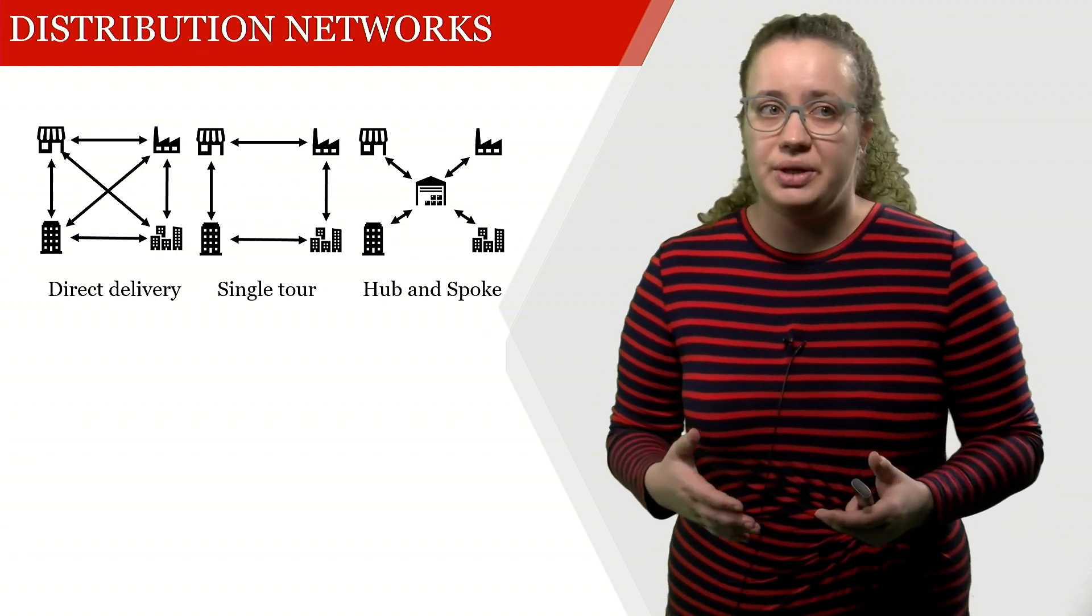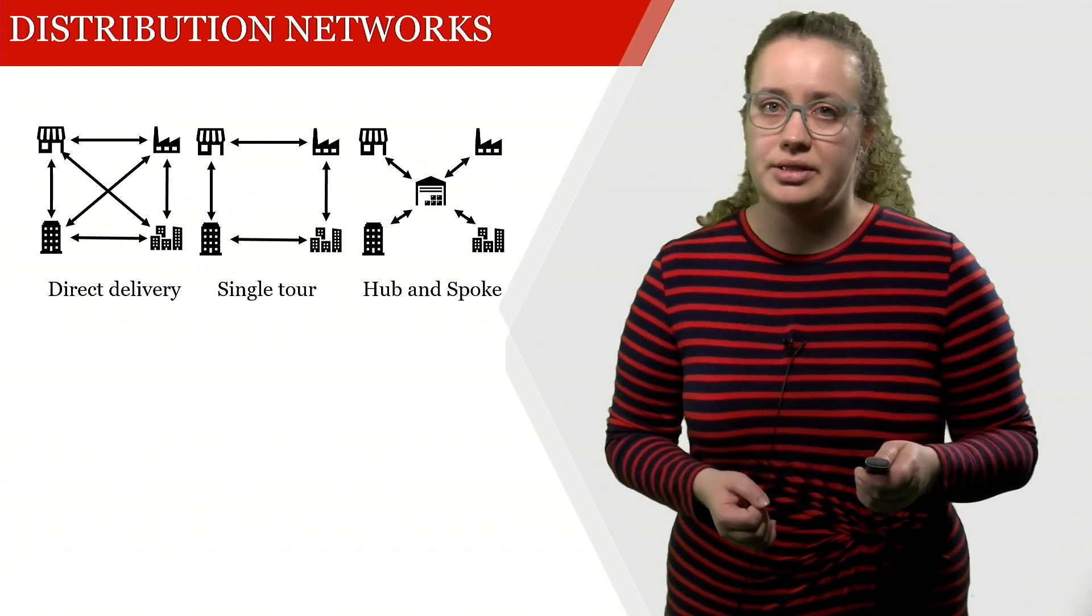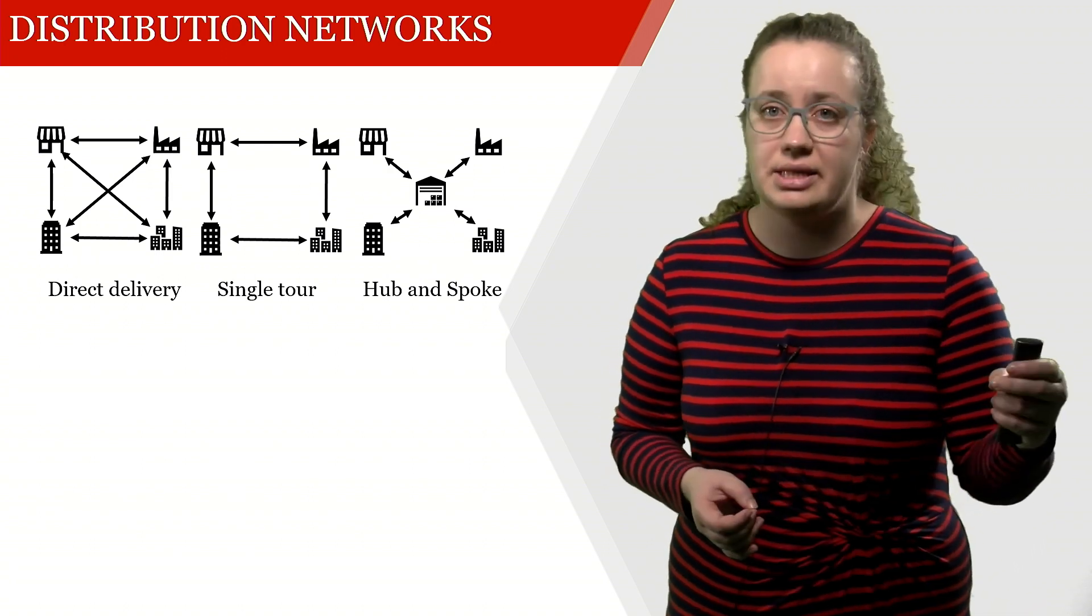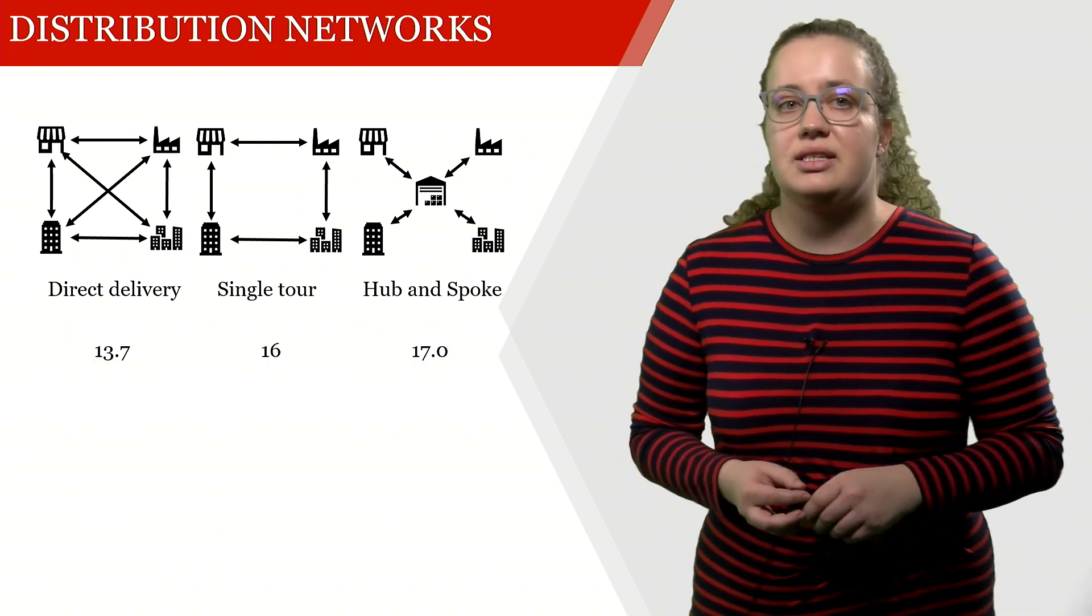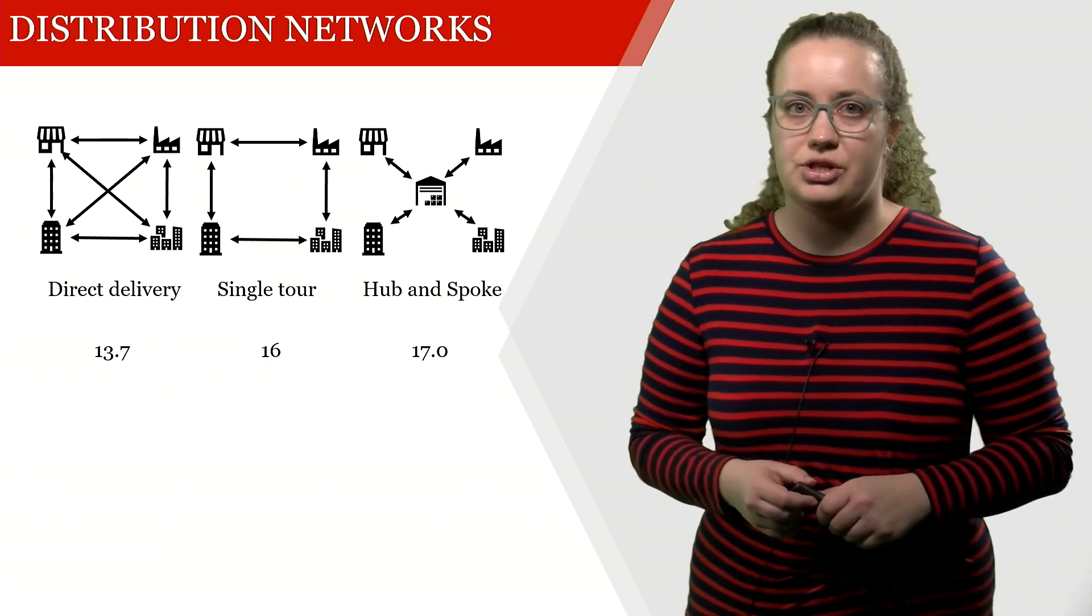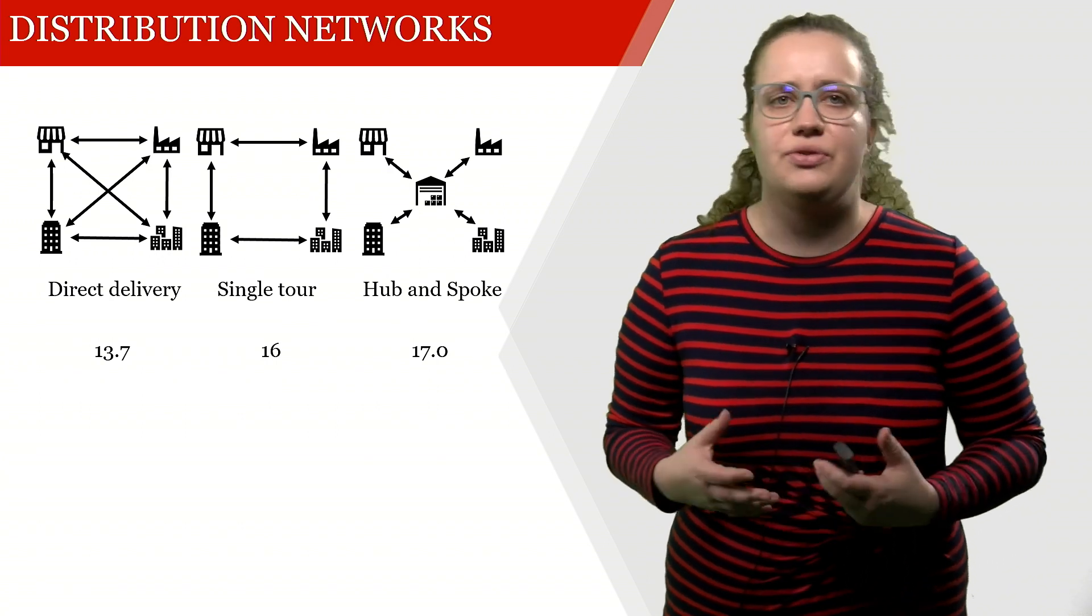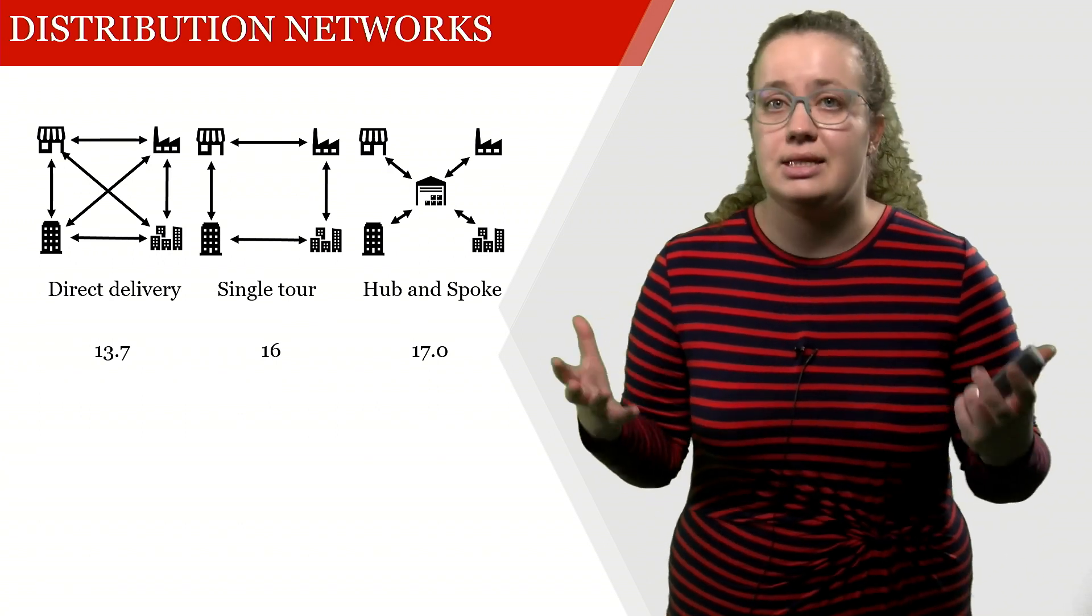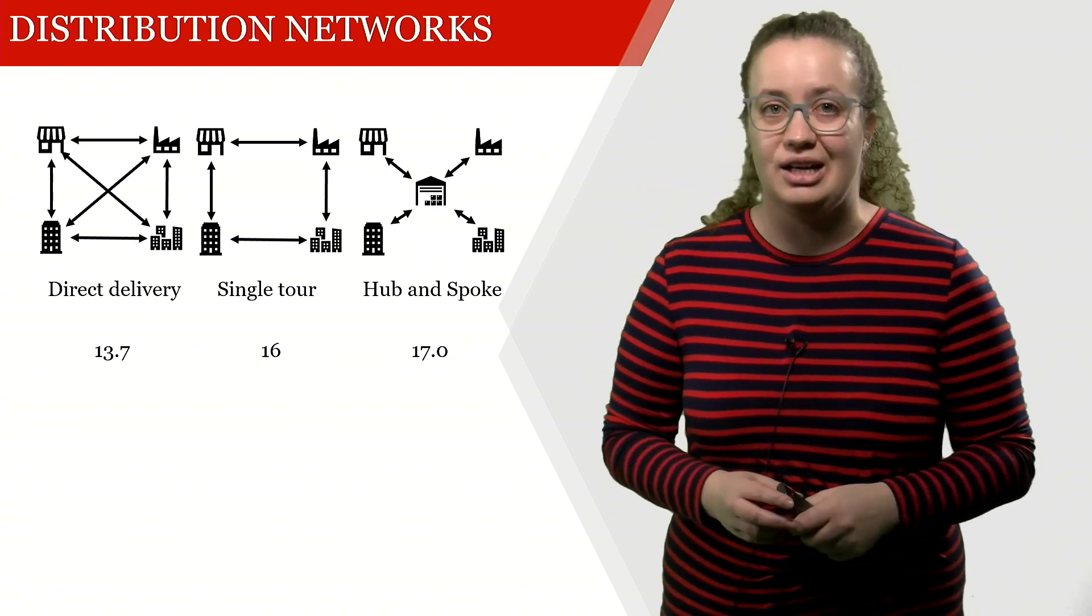The first thing we're going to look at is variable costs. How much does it cost us to transport these items within this network? This is just summing up the shortest path through this network for each origin destination pair. This is the cheapest for the direct delivery, which is very unsurprising because we're shipping everything on the fastest route that we can and we have all options available.